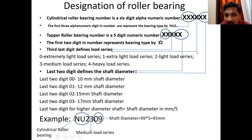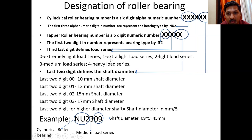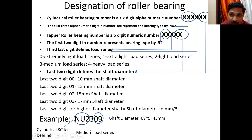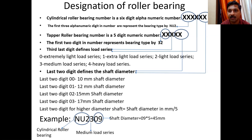The third digit again represents the load series — the type of load the bearing can sustain: 0 for extremely light load, 1 for extra light, 2 for light load, 3 for medium load, and 4 for heavy load. The last two digits again define the same shaft diameter as in the ball bearing. So compared to a ball bearing, the cylindrical roller bearing number has six digits with the first three alphanumeric digits defining NU2 for the bearing type.